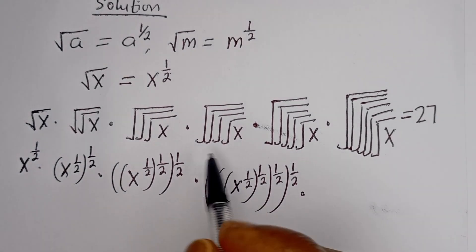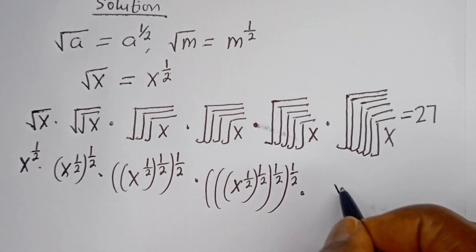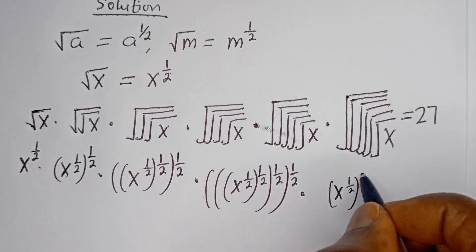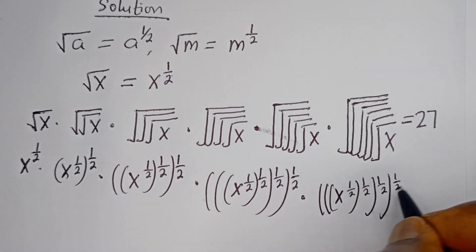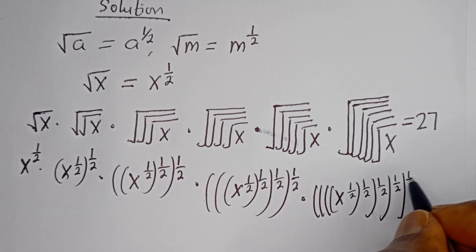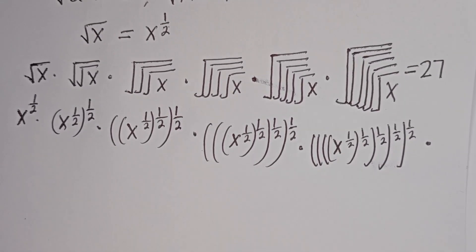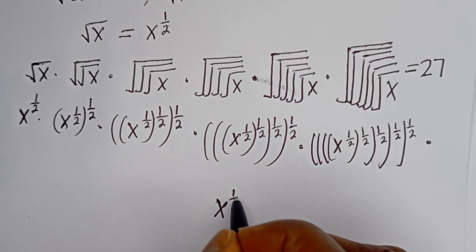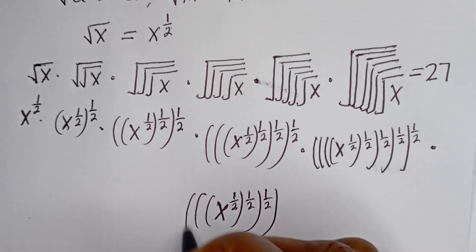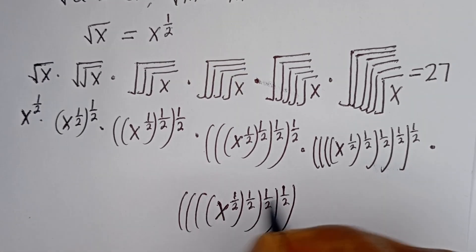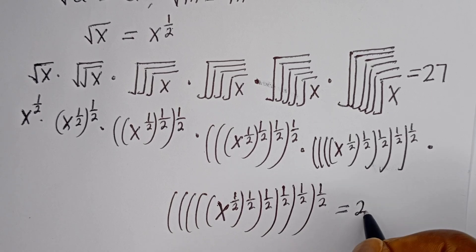Continuing this pattern: with four nested square roots we get s^(1/2)^(1/2)^(1/2)^(1/2), with five nested square roots we get s^(1/2)^(1/2)^(1/2)^(1/2)^(1/2), and with six nested square roots we get s^(1/2)^(1/2)^(1/2)^(1/2)^(1/2)^(1/2). All multiplied together equals 27.